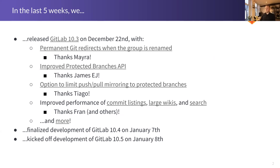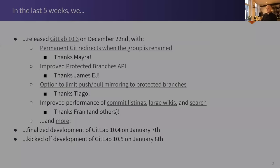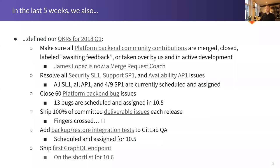Then on the 7th of January, we finalized development of GitLab 10.4, which I'll get to in the next couple slides. And then the day afterwards, about two weeks ago to the day, we kicked off development of GitLab 10.5. In the last five weeks, we also defined our OKRs for 2018 Q1, all of which are listed here. You can follow the link to the OKRs to see some more details, and you can follow the links in the slide if you want to read more as well.